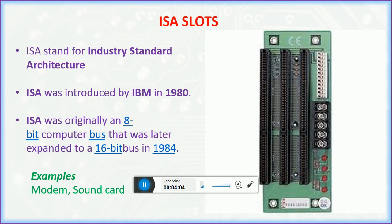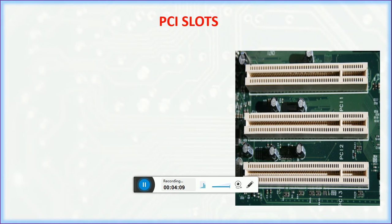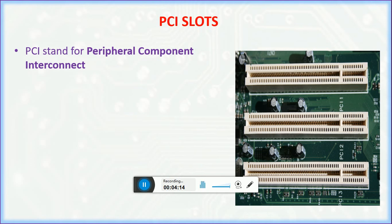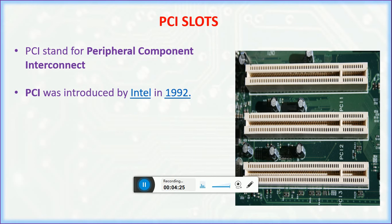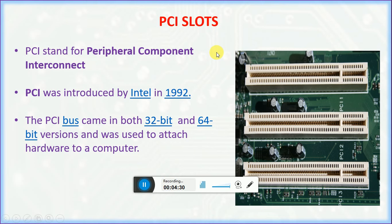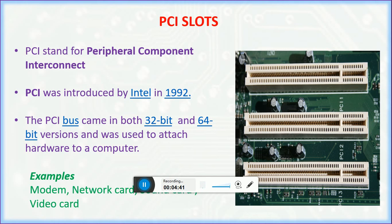The peripheral components are interconnected. PCI — the speed is 32-bit version, and the 64-bit version is 64-bit, and the speed is ready for 32-bit version.